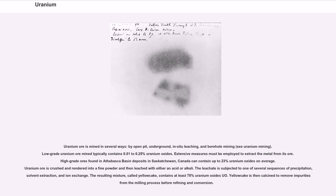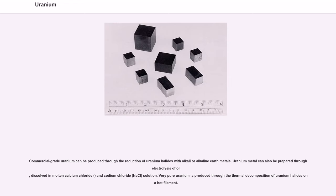Uranium ore is crushed and rendered into a fine powder and then leached with either an acid or alkali. The leachate is subjected to one of several sequences of precipitation, solvent extraction, and ion exchange. The resulting mixture, called yellowcake, contains at least 75 percent uranium oxides U3O8. Yellowcake is then calcined to remove impurities from the milling process before refining and conversion. Commercial-grade uranium can be produced through the reduction of uranium halides with alkali or alkaline earth metals. Uranium metal can also be prepared through electrolysis of KF·UF4 dissolved in molten calcium chloride and sodium chloride (NaCl) solution. Very pure uranium is produced through the thermal decomposition of uranium halides on a hot filament.